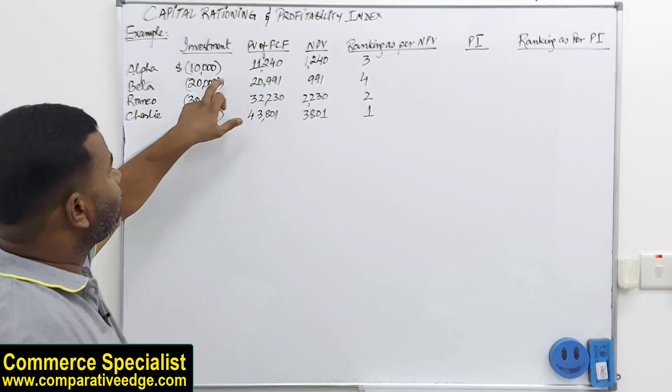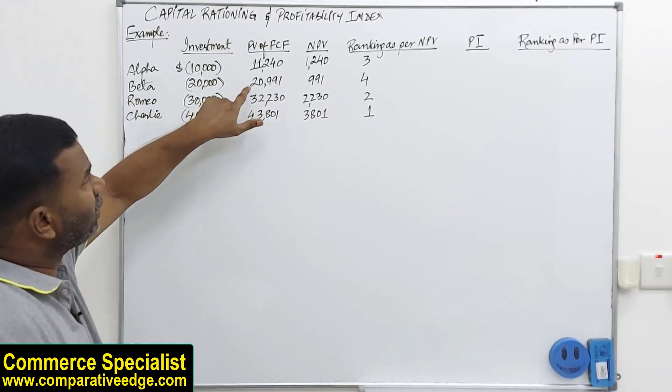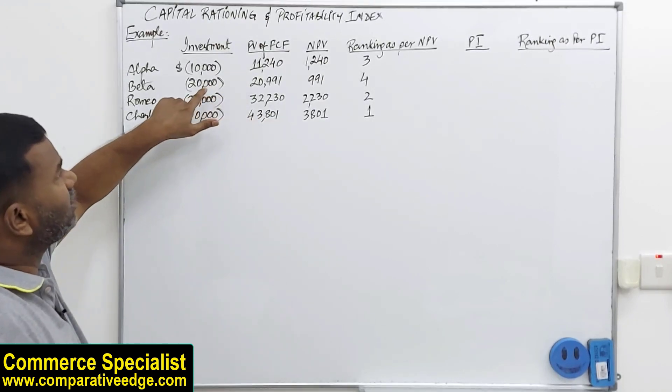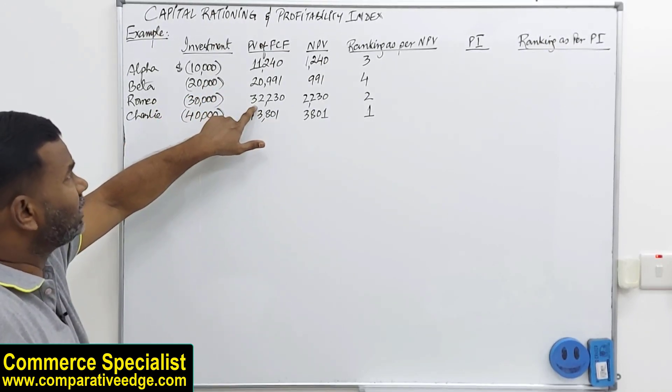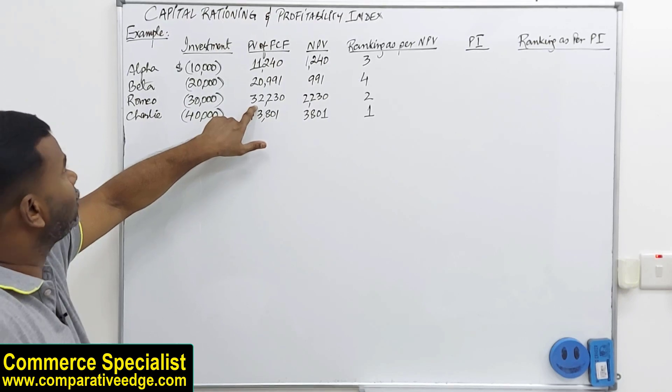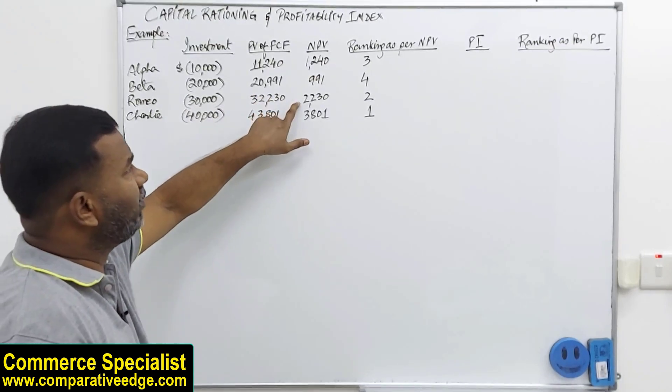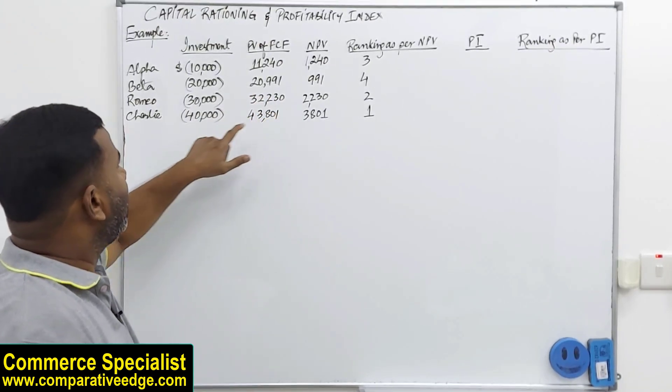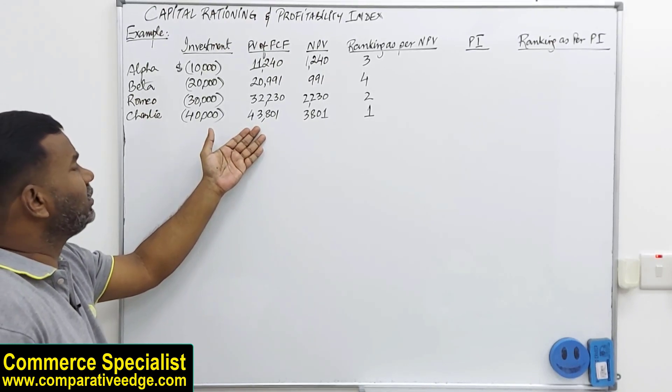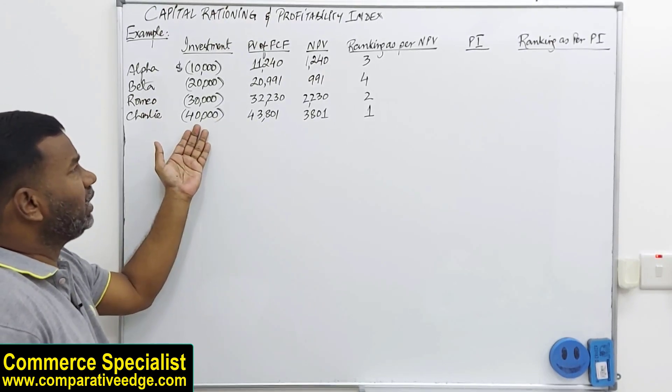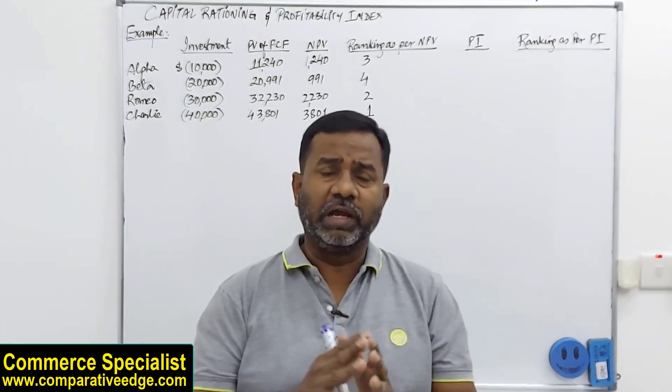If you minus the initial investment, you will get NPV. 20,991 minus 20,000 will give you a positive NPV because the present value of future cash flows is more and the initial investment required is less. Same here, 32,230 is the present value of future cash flows for Romeo and your initial investment is just 30, giving you a positive NPV of 2,230. For Charlie, the present value of future cash flows is 43,801 and the initial investment is 40, giving you a positive net present value of 3,801.